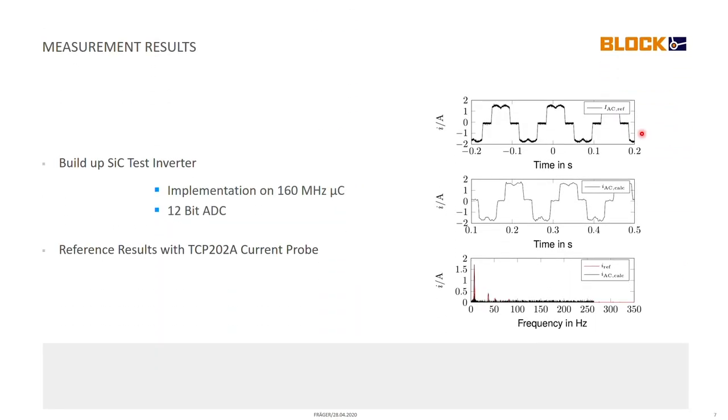Here's some measurement results. We built up a silicon carbide test inverter and implemented the algorithm on a 160 megahertz microcontroller with a 12-bit resolution ADC. You can see here that the results actually look quite similar. This is the reference measurement. This is the calculated result from the microcontroller. And then down here, we also have the frequency spectrum of the ADC, which is zoomed in here a little bit. We see that for the fundamental and also for the first harmonics, it looks pretty much the same. And then we see that we have a large noise floor, which is due to a probably somehow poor PCB design.